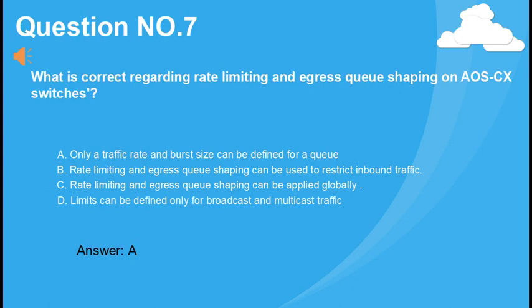What is correct regarding rate limiting and egress queue shaping on AOS-CX switches? A. Only a traffic rate and burst size can be defined for a queue. B. Rate limiting and egress queue shaping can be used to restrict inbound traffic. C. Rate limiting and egress queue shaping can be applied globally. D. Limits can be defined only for broadcast and multicast traffic. Answer: A.